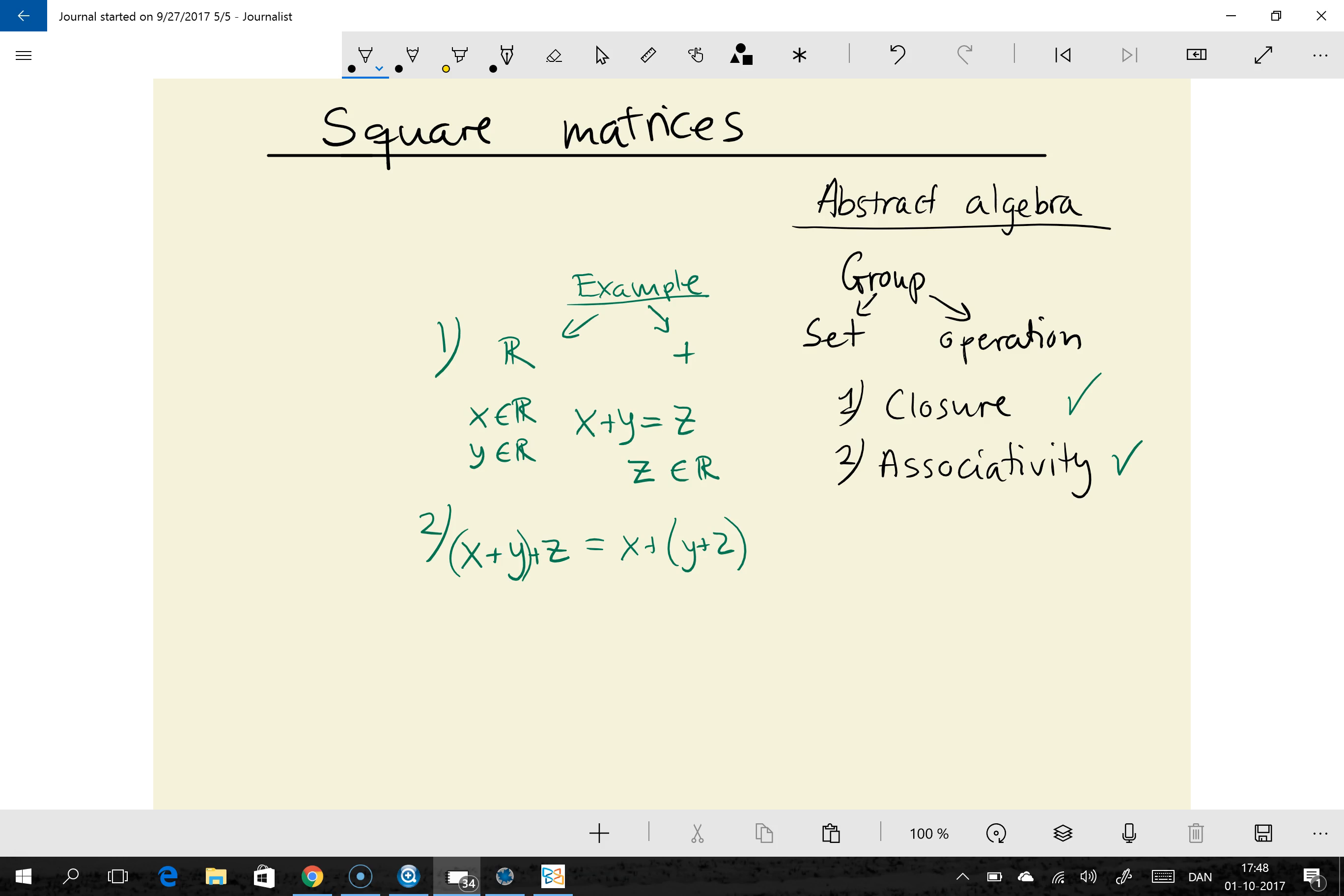The third requirement is the existence of a neutral element. And what that means is that there should be an element in the set, let's call it e, so that when you add e to x you just get x itself as a result. So this element e is the neutral element and it's pretty obvious that in the case of the real numbers, the neutral element e is 0 because if you add 0 to any number you just get the same number as a result. So we can safely say that this requirement is met as well.